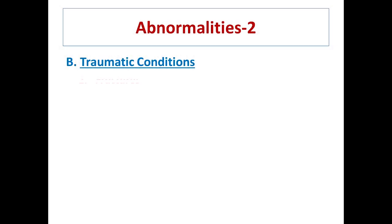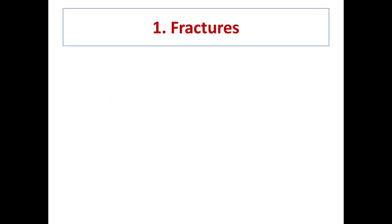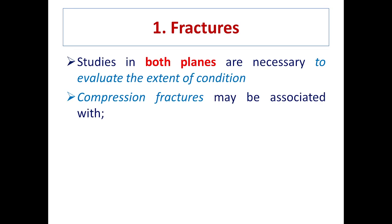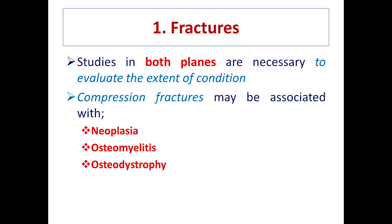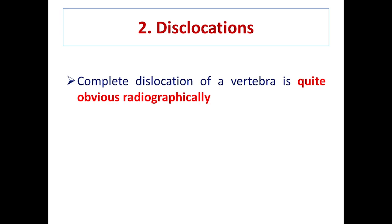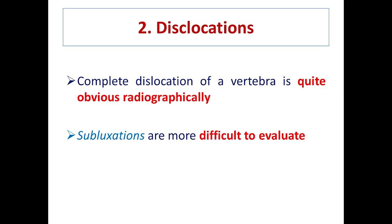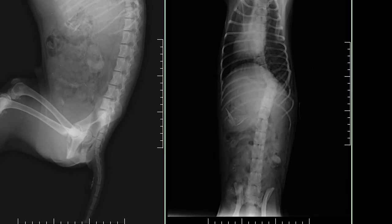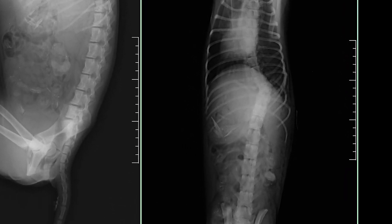Traumatic conditions include fractures and dislocations. To evaluate the extent of a fracture, both planes are essential. Compression fractures are associated with neoplastic growth, osteomyelitis, osteodystrophy, and trauma. This is a case of traumatic fracture of the vertebral column showing traumatic changes in the vertebrae.